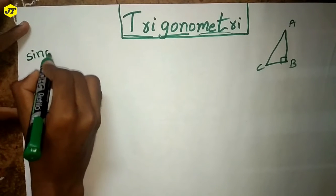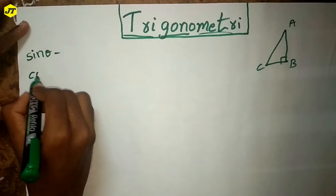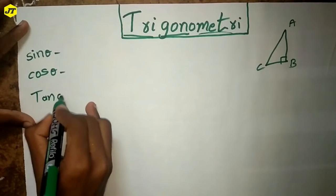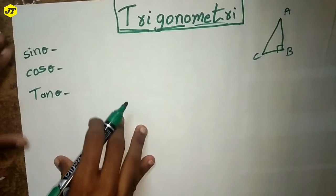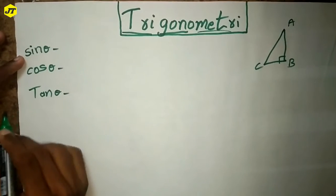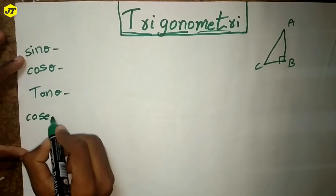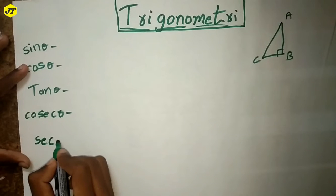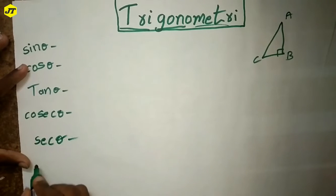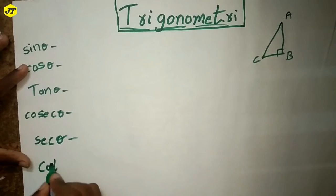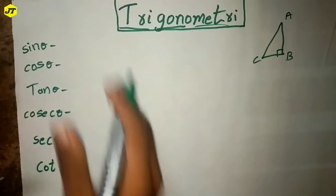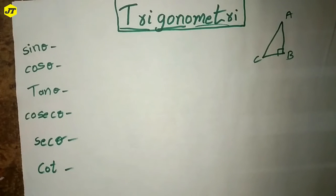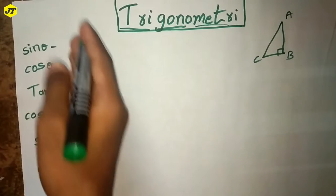Sine theta, cos theta, tan theta, cosecant theta, secant theta, and cot theta. There are six ratios — these are the main trigonometric ratios. Now let's see what these ratios are and what is the full view of trigonometry.